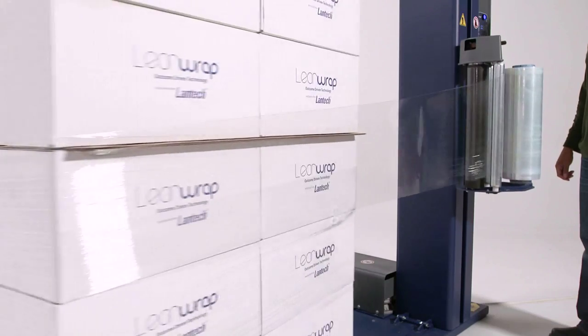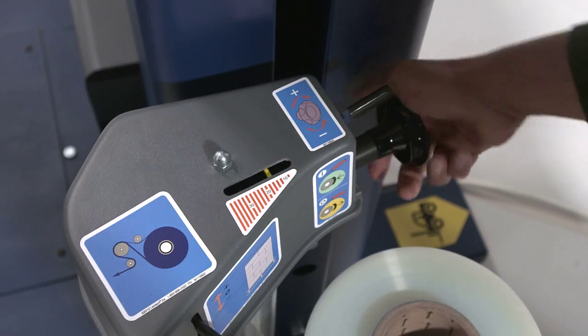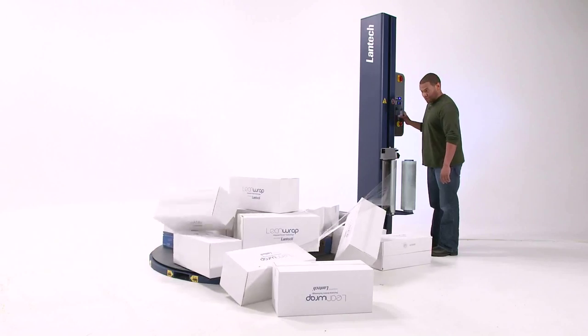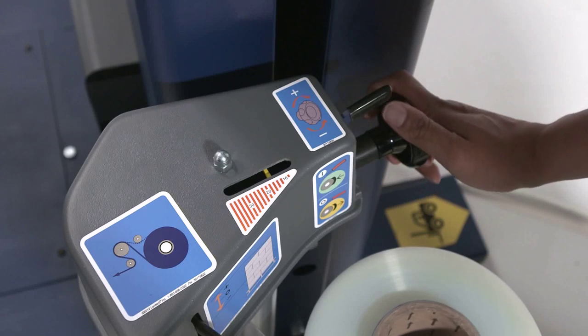If you're having film breaks, turn the tension down. If you are having an issue with the load coming off the turntable, simply turn the tension down.